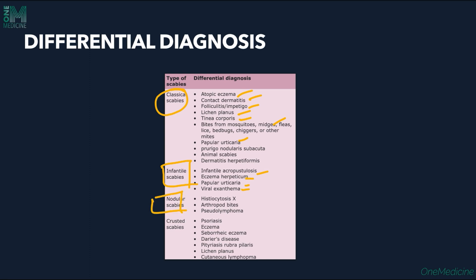Nodular scabies needs to be differentiated from histiocytosis, xanthomas, pseudolymphomas. Crusted scabies, the hyperkeratotic variant, must be differentiated from psoriasis with its silvery scales, eczema, seborrheic dermatitis, and other keratinizing disorders such as pityriasis rubra pilaris, lichen planus, and cutaneous lymphomas.